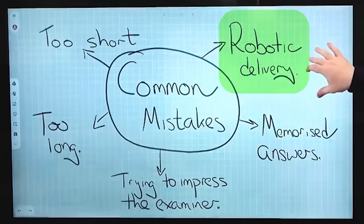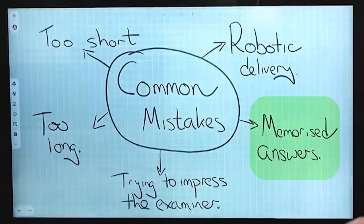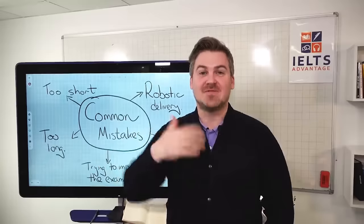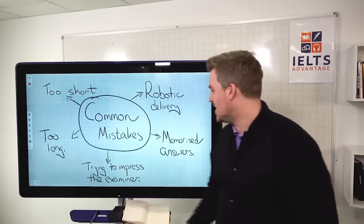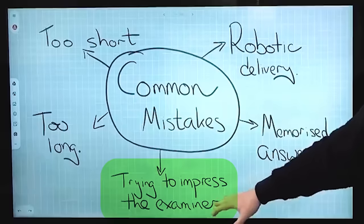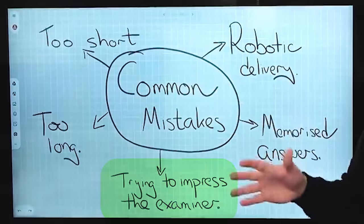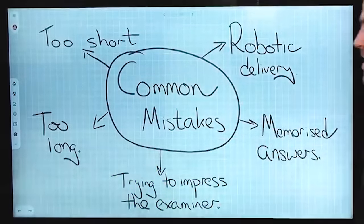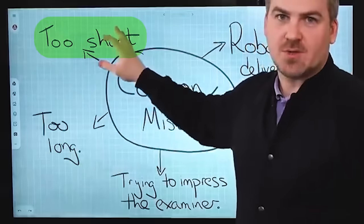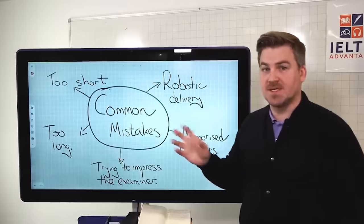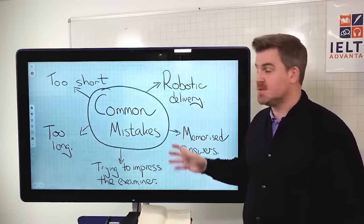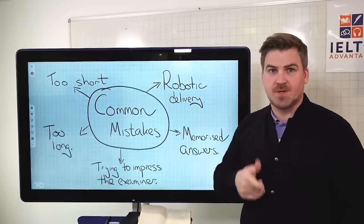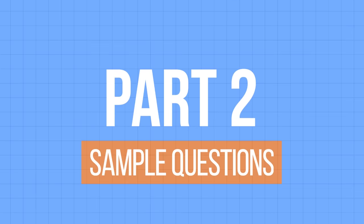So robotic delivery, so speaking like a robot, memorized answers, giving a memorized answer instead of just a normal answer, trying to impress the examiners, way too long and way too short. So think about these, it might be multiple ones or it might just be one, but let's start with the first question.